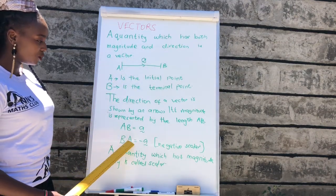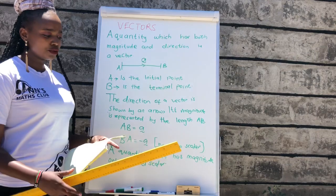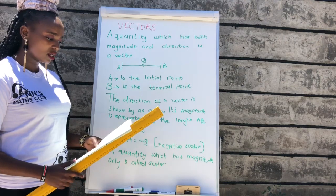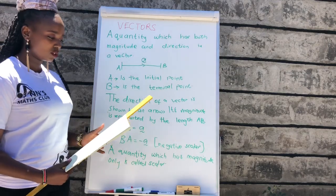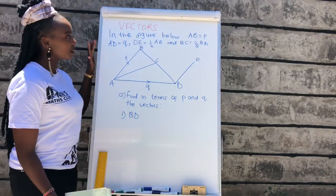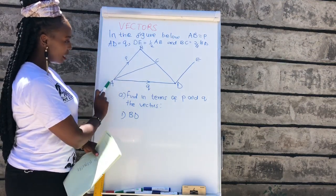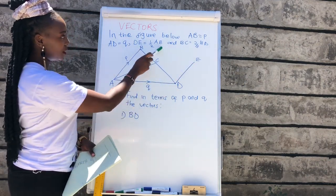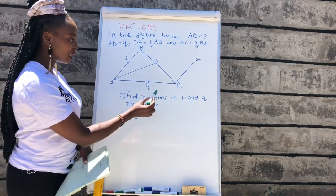Like we've done here, when we are coming from B to A, it automatically becomes negative A. So with this, let's go through a KCSE question, paper 1, section B, worth 10 marks. I'll show you how to calculate it and the tricks and hacks you need to know. Here is the first question: AB is P, AD is Q, DE is a half of AB, and BC is two-thirds of BD. You've been asked to find in terms of P and Q the vector BD.